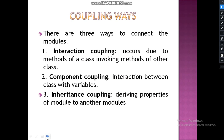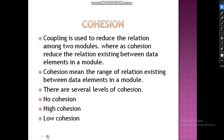There are three ways to connect modules. Interaction coupling occurs when methods of one class invoke methods of another class. Component coupling is the interaction between classes using variables — when two modules interact with variables, it is called component coupling. Inheritance coupling means deriving properties from one module to another module.